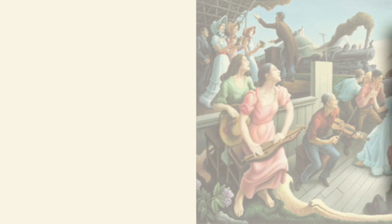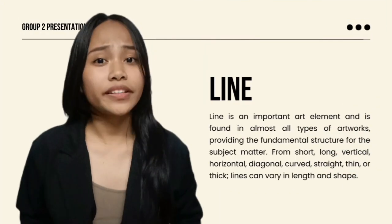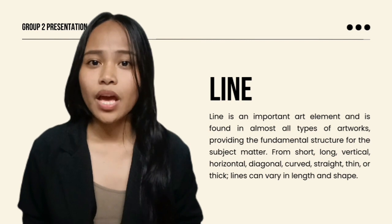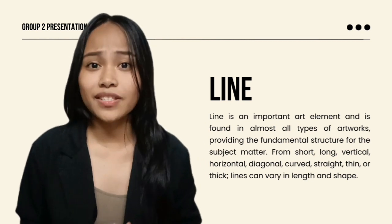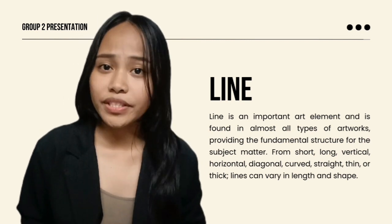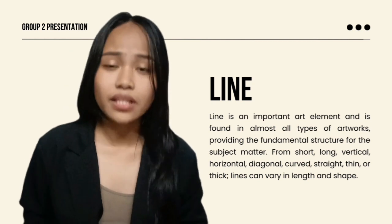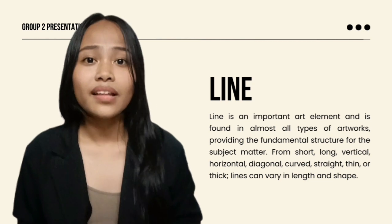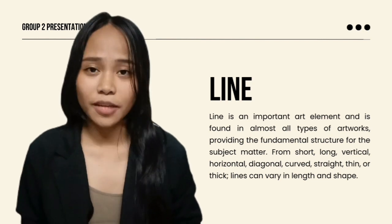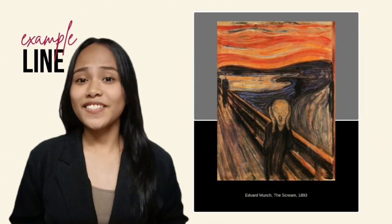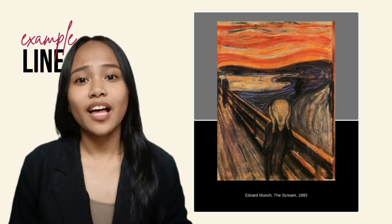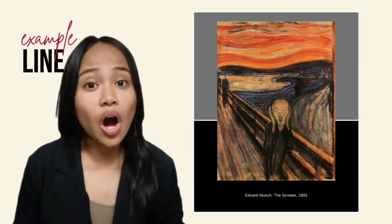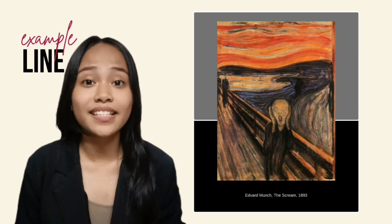Another art element is line. Line is an important art element found in almost all types of artworks, providing the fundamental structure for the subject matter. From short, long, vertical, horizontal, diagonal, curved, straight, thin, or thick, lines can vary in length and shape. In this example of expressive lines in art, Edward Munch uses wavy lines in contrast with a long, straight diagonal line to convey anxiety.